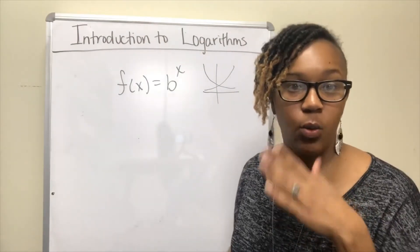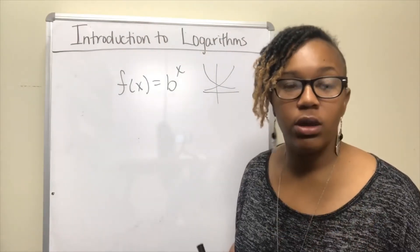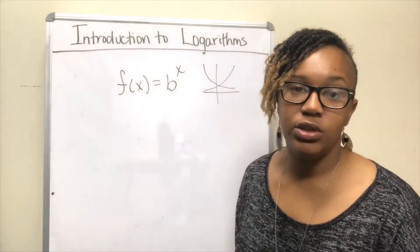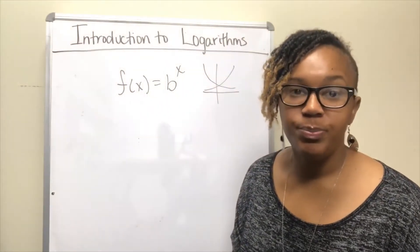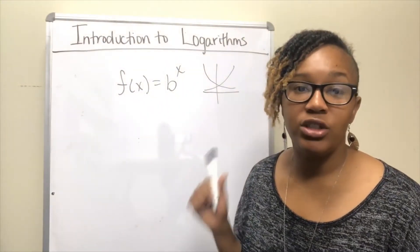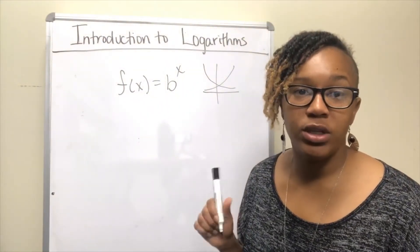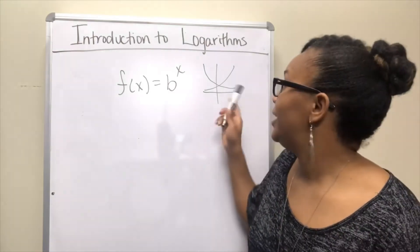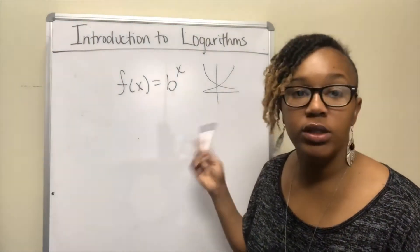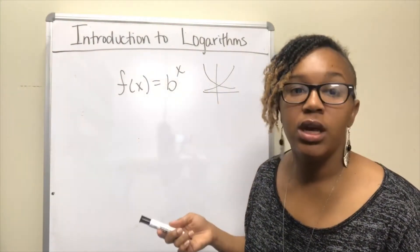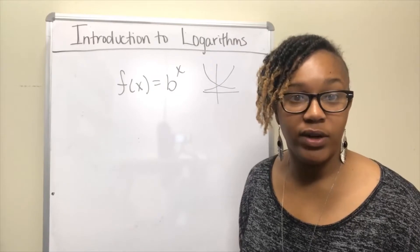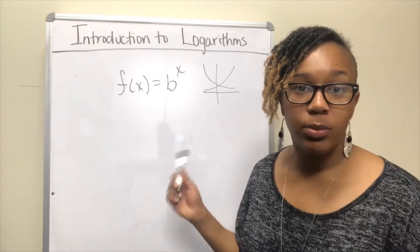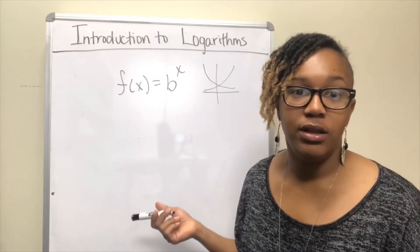If the base is bigger than 1, it's growth. If the base is between 0 and 1, then it's an exponential decay function. I drew these because I want you to see that regardless if it's growth or decay, it is a one-to-one function. And one-to-one functions have inverses, so we want to go through the process of finding the inverse.